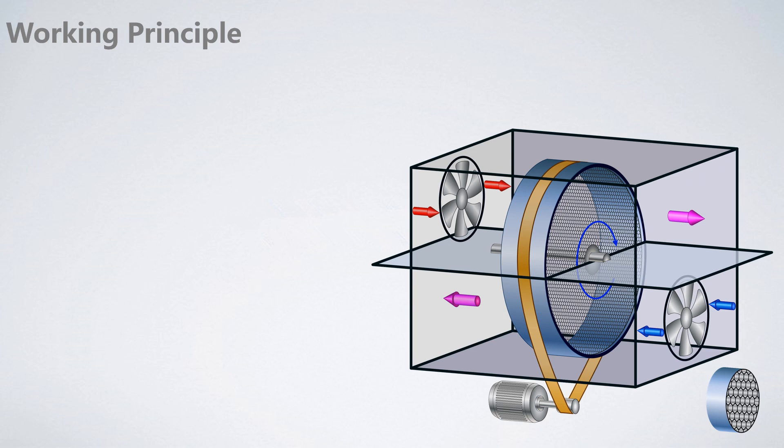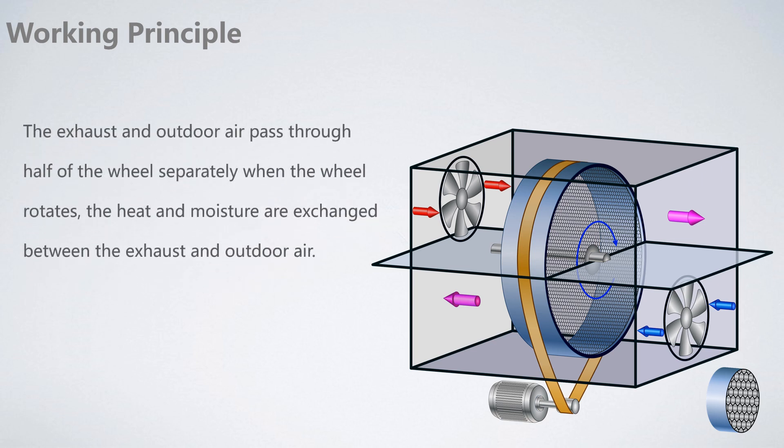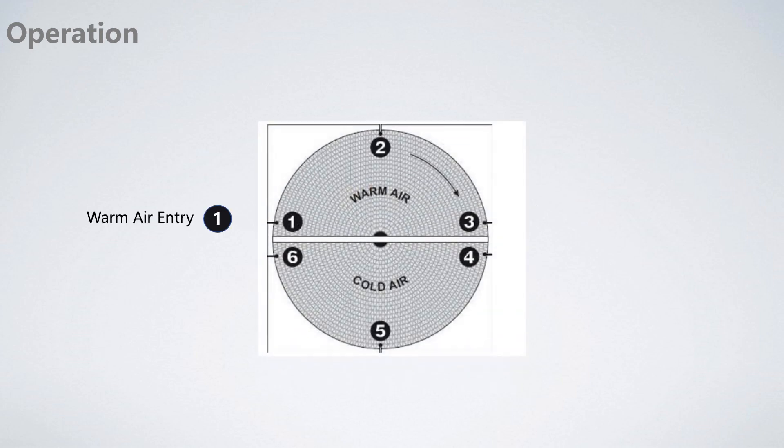The first type: rotary thermowheels. Here is the working principle. The exhaust and outdoor air pass through half of the wheel separately. When the wheel rotates, the heat and moisture are exchanged between the exhaust and outdoor air.